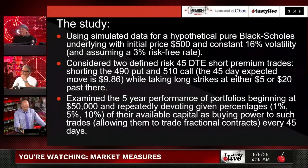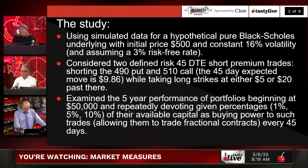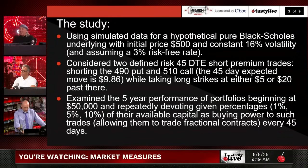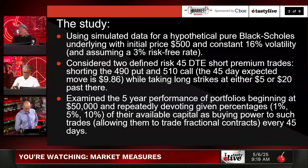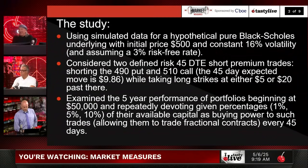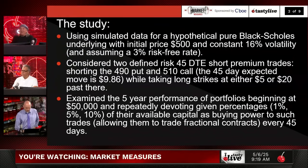Here's the study. We use simulated data for the hypothetical: a Black-Scholes underlying with an initial price of $500 and a constant 16% volatility, assuming a 3% risk-free rate. Then consider two defined risk, 45-day expiration short premium strategies — shorting the $495/$510 strangle while doing the long strikes either $5 or $20 away. So basically an iron condor version that's $5 wide or $20 wide in a constant marketplace. We examine the five-year performance of portfolios beginning at $50,000, repeatedly devoting given percentages — one percent, five percent, and ten percent of available capital as buying power to such trades, allowing fractional contracts to keep the math easy.